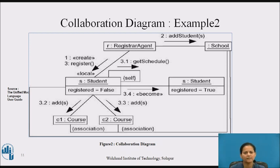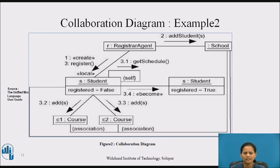When we model the dynamic aspects of a system, we typically use a collaboration diagram to model flows of control by organization. Modeling a flow of control by organization emphasizes the structural relationships among the instances in the interaction along which messages may be passed. Collaboration diagrams do a better job of visualizing complex iteration and branching and multiple concurrent flows of control than do sequence diagrams.